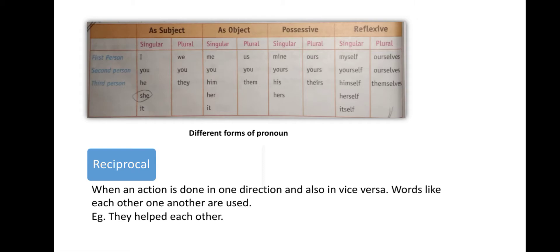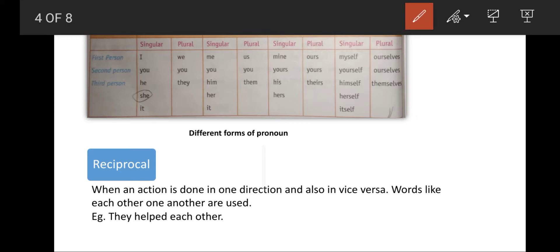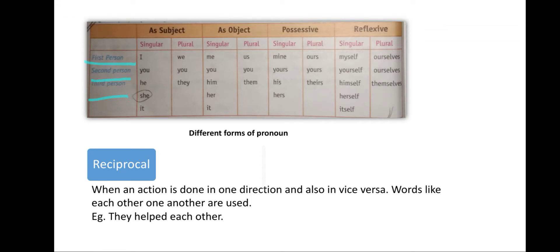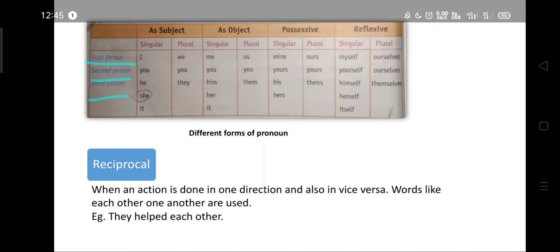Now, the pronouns we use in our daily life are of three persons: first person, second person, and third person. The person who is speaking will be the first person. The person to whom I am speaking will be the second person. And the person about whom we — the first and second person — are talking will be the third person. We will learn how to use different pronouns in different situations with the help of a table.